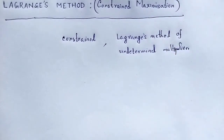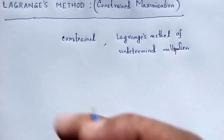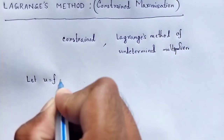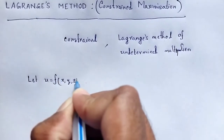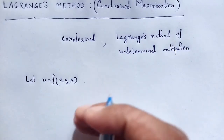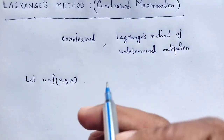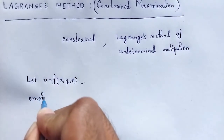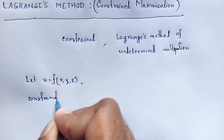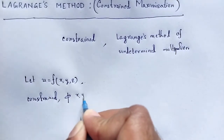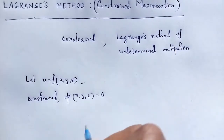Let us discuss what is Lagrange's method of undetermined multiplier. Let u be a function of x, y, z, where x, y, z are related by a known constraint. Let that constraint be φ(x, y, z) = 0.